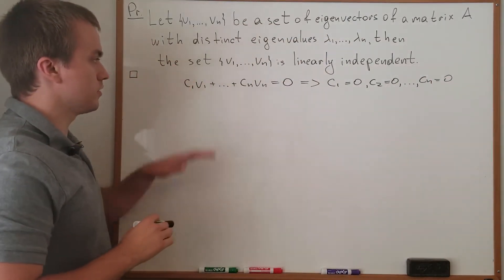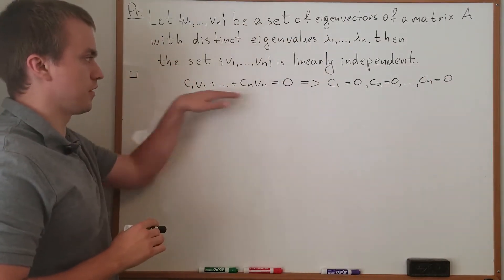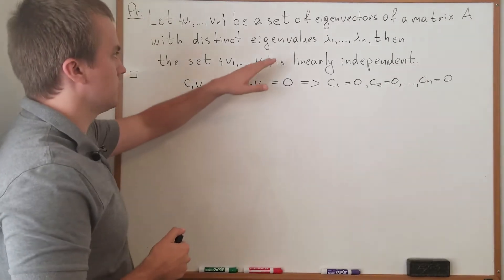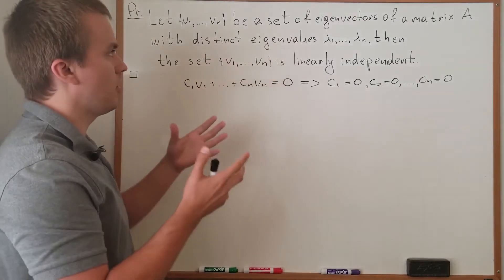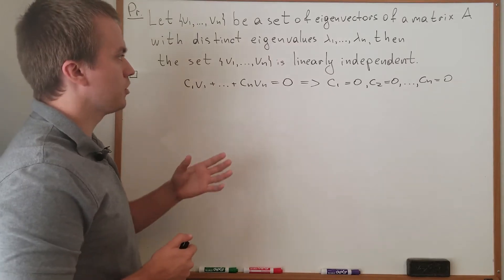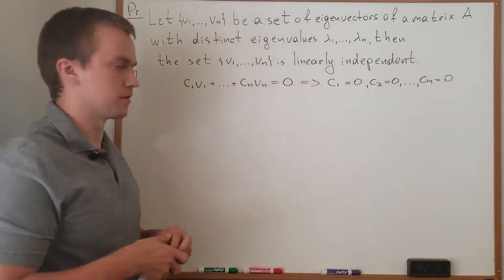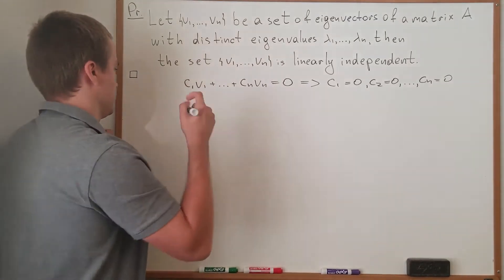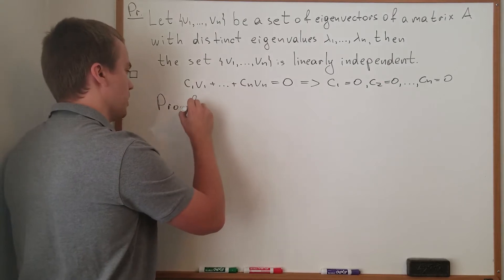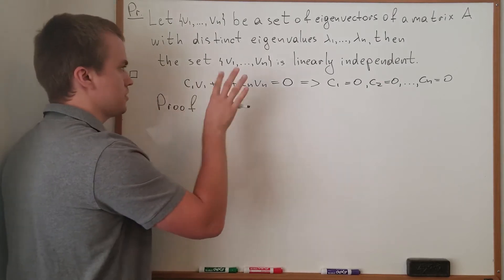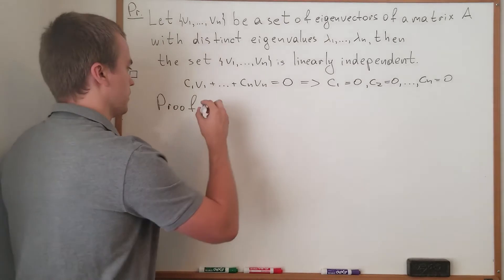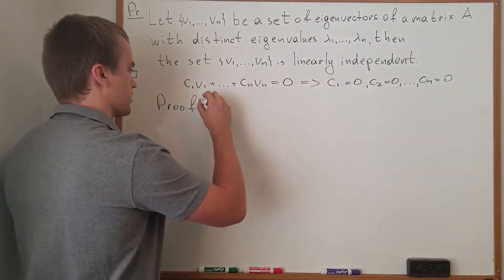So let's consider how I'm going to prove that the set of eigenvectors is actually linearly independent. I'm going to prove this by induction. It's a technical proof, but for this theorem it works really well.